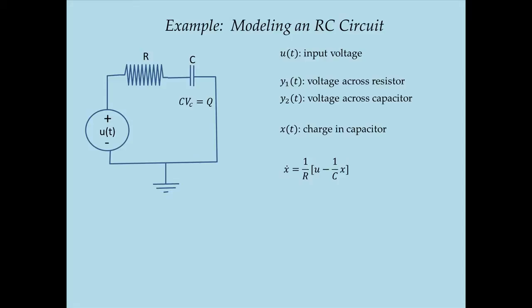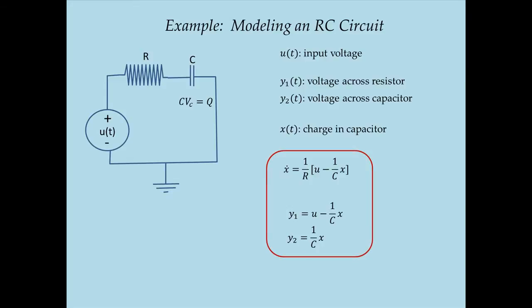Now we want the output equations. The voltage across the resistor, Y1, is the input voltage U minus the capacitor voltage (X/C). The voltage across the capacitor itself, Y2, is simply (1/C)·X. We have now built a state-space model of the RC circuit containing a governing equation for the rate of change of the state variable — capacitor charge — and two output equations. We will come back and simulate this state-space model in Modelica.